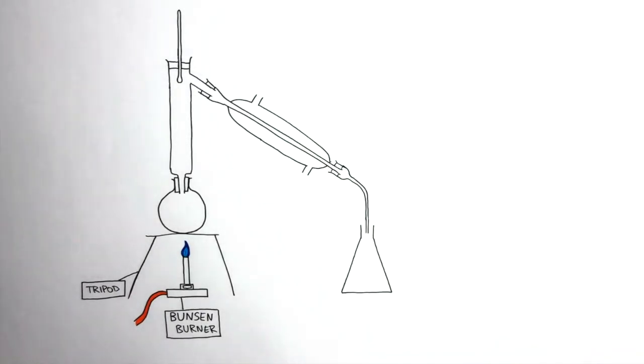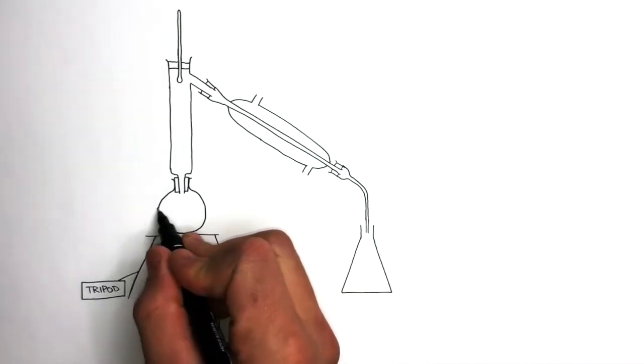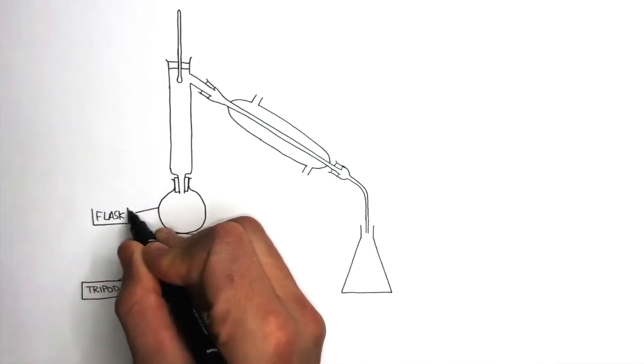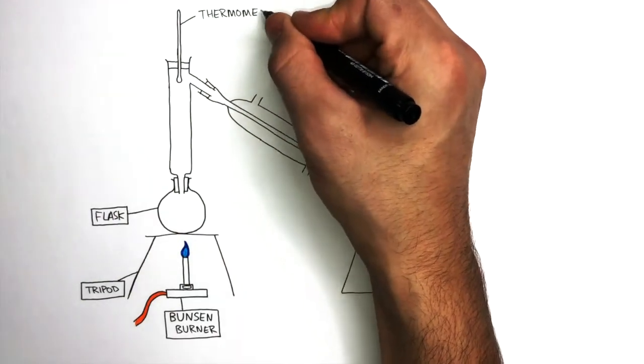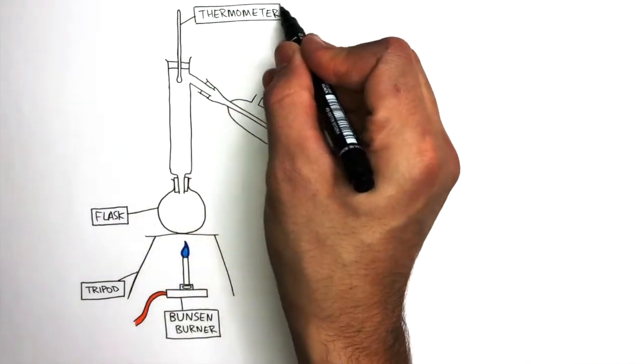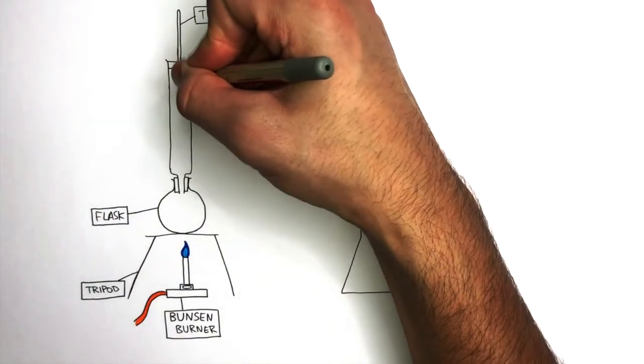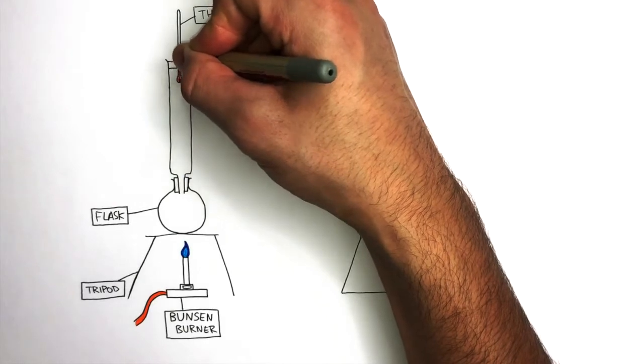A Bunsen burner and tripod are used to safely heat the mixture. The round bottom flask contains the mixture. The thermometer is used to measure the temperature of the evaporated gas. This identifies the boiling point.